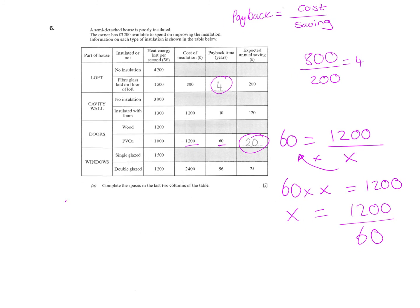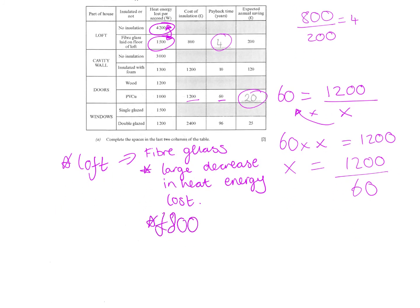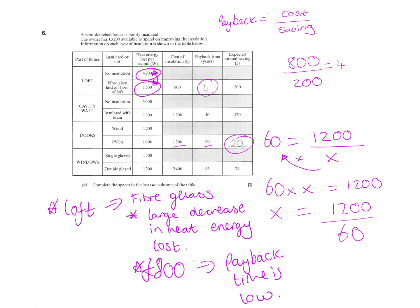I would start by mentioning the loft and the fact by putting the fibreglass on the loft, look at the energy difference. You are saving loads of energy there to start with. Originally 4,200 would have been lost in heat, now only 1,500 is. So there's a large decrease in heat energy loss. It only costs £800, and you could pay it back. That would be where I'd spend my first £800.